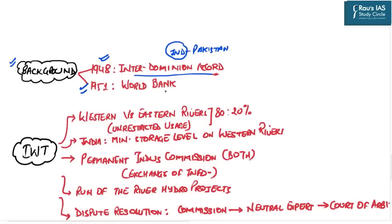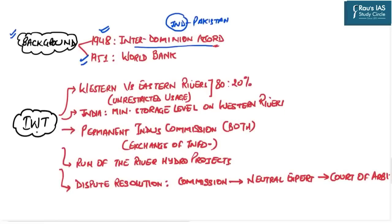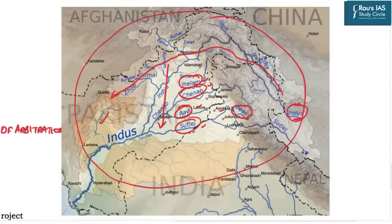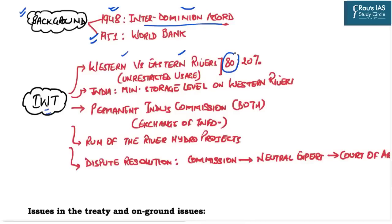The key feature of the Indus Waters Treaty was a division between western and eastern rivers. Indus, Jhelam, and Chenab are the western rivers — Pakistan was granted unrestricted usage rights over these. Ravi, Beas, and Satluj are the eastern rivers — India was granted unrestricted usage rights over these. This means approximately 80% of total water went to Pakistan and 20% to India.